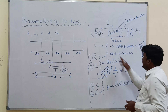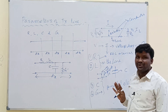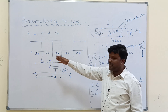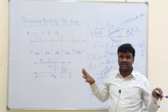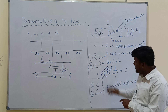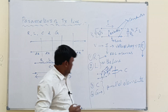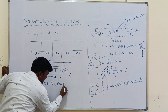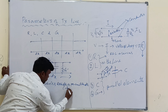These R, L, C, G are the parameters of the transmission line, and they are uniformly distributed throughout the length of the line. For example, a transmission line of 5 meters divided into equal parts has each 1-meter part consisting of R, L, C, and G. That's why the transmission line is an example of a distributed network. These parameters are always defined per unit length. R is defined as series resistance per unit length, with units of ohms per meter.